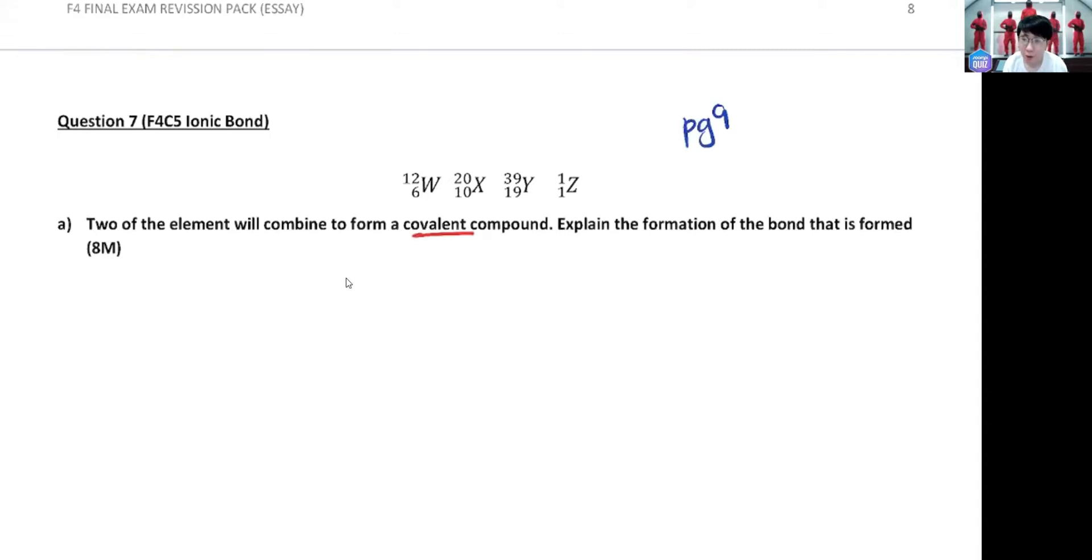What's the requirement? What plus what? Is it metal plus metal, metal plus non-metal, or non-metal plus non-metal? Very good, exactly - non-metal plus non-metal. Can you guys just give it a brainstorm - which two do you think can combine to form a covalent compound? Just find among W, X, Y, Z who is non-metal, you should get your answer.